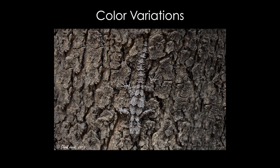We next show our results for color variations. In this example, the lizard has a slightly different color from the background but still consists of similar texture. Therefore, small patches on the lizard are compared with patches on the tree's bark. Our exaggerated image highlights the color variations between the lizard and the background.